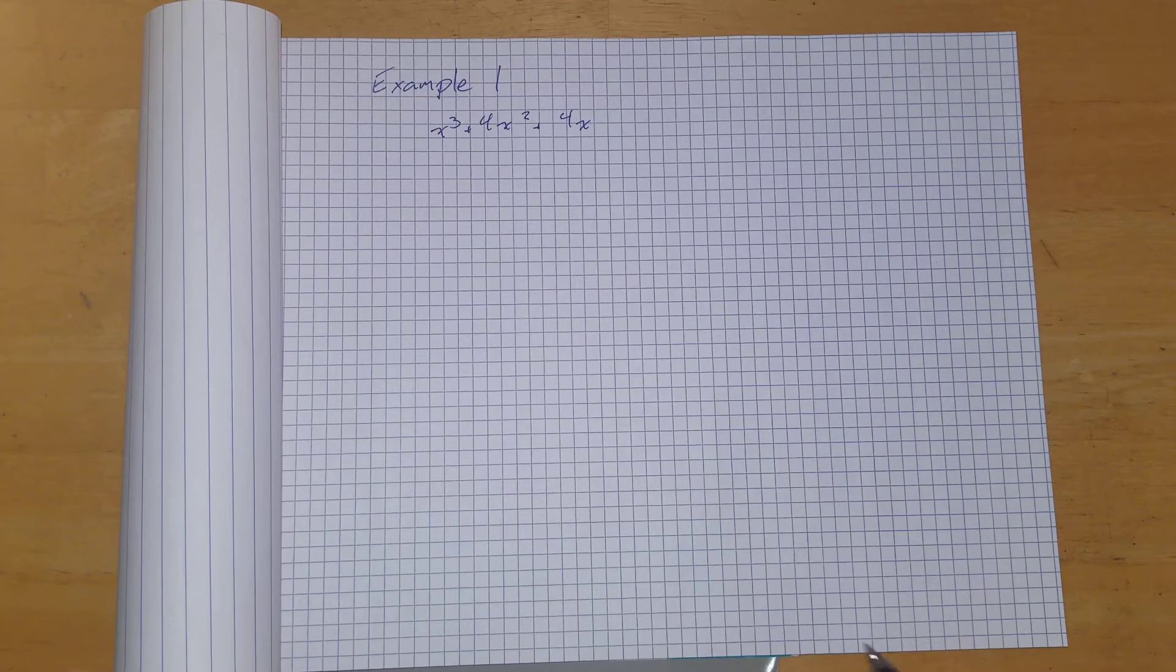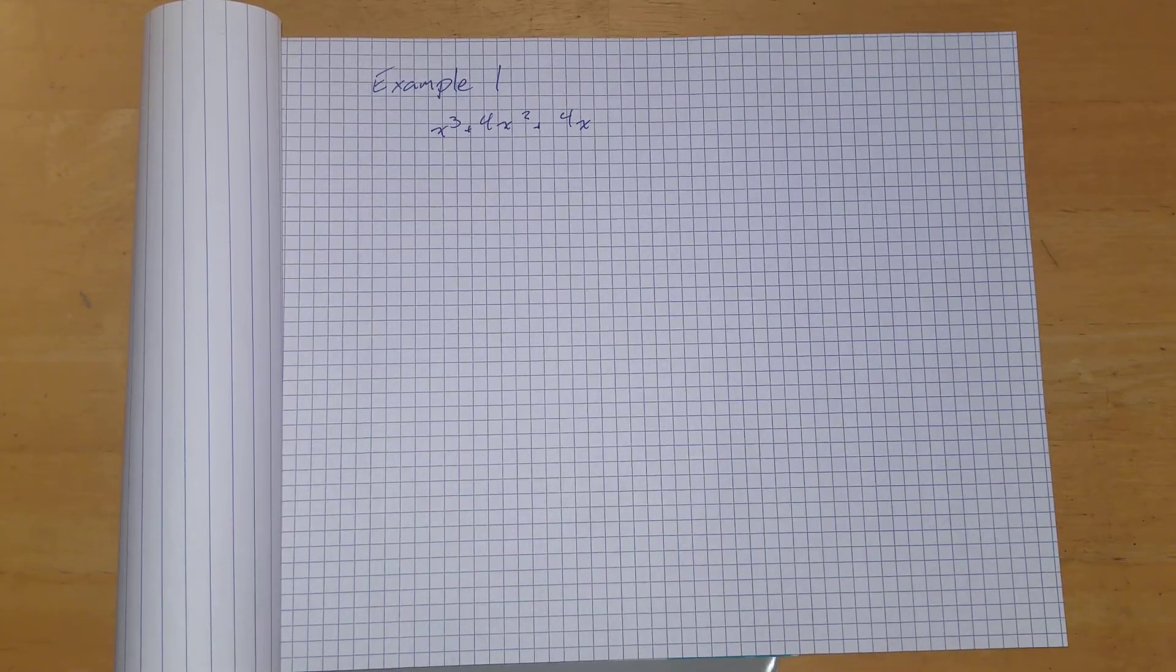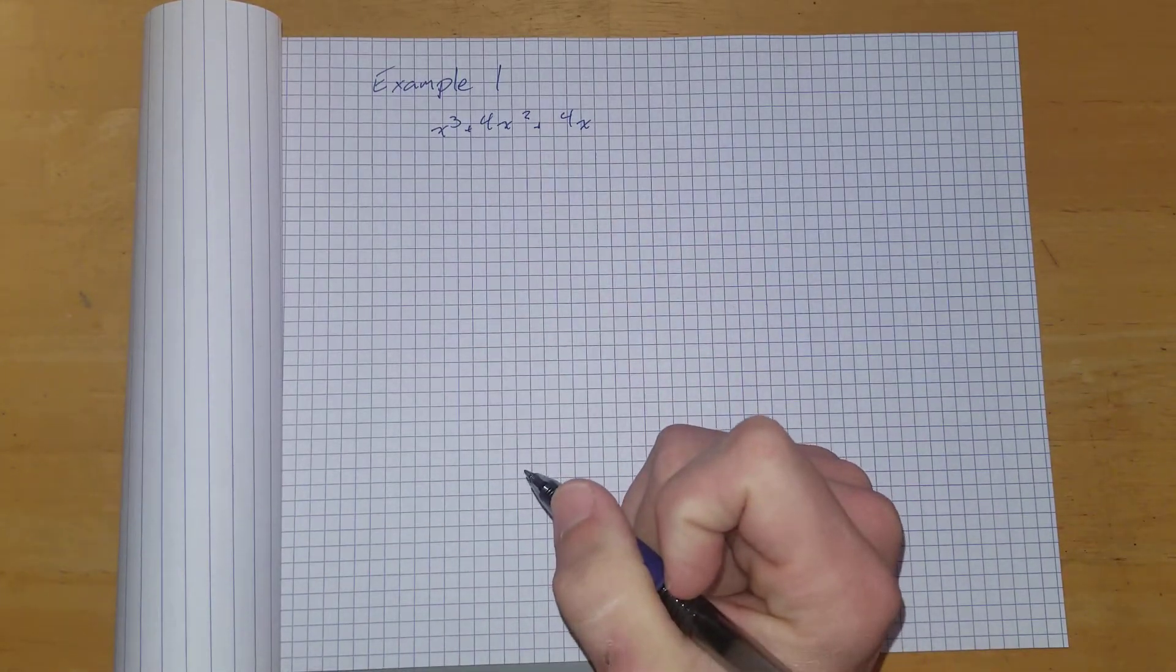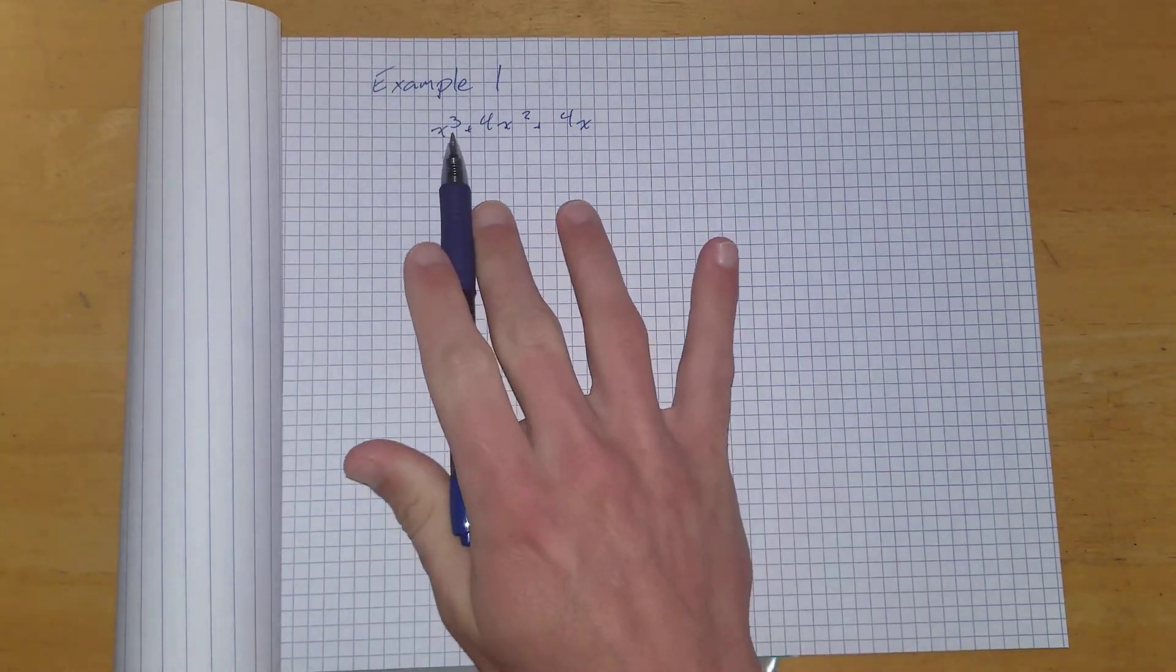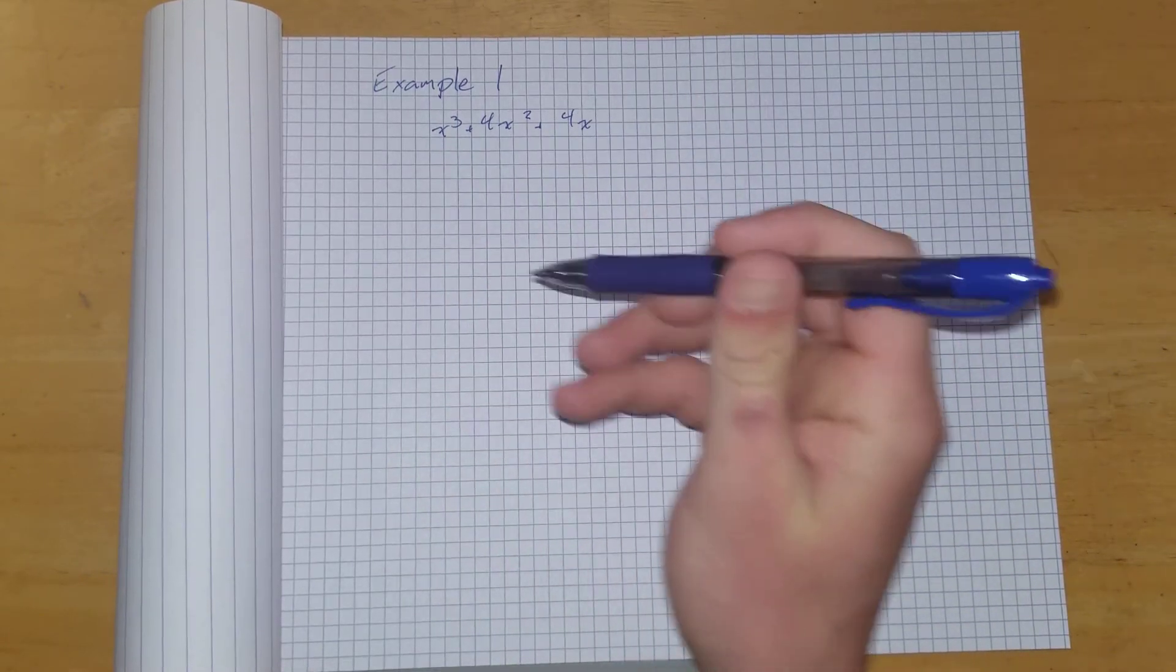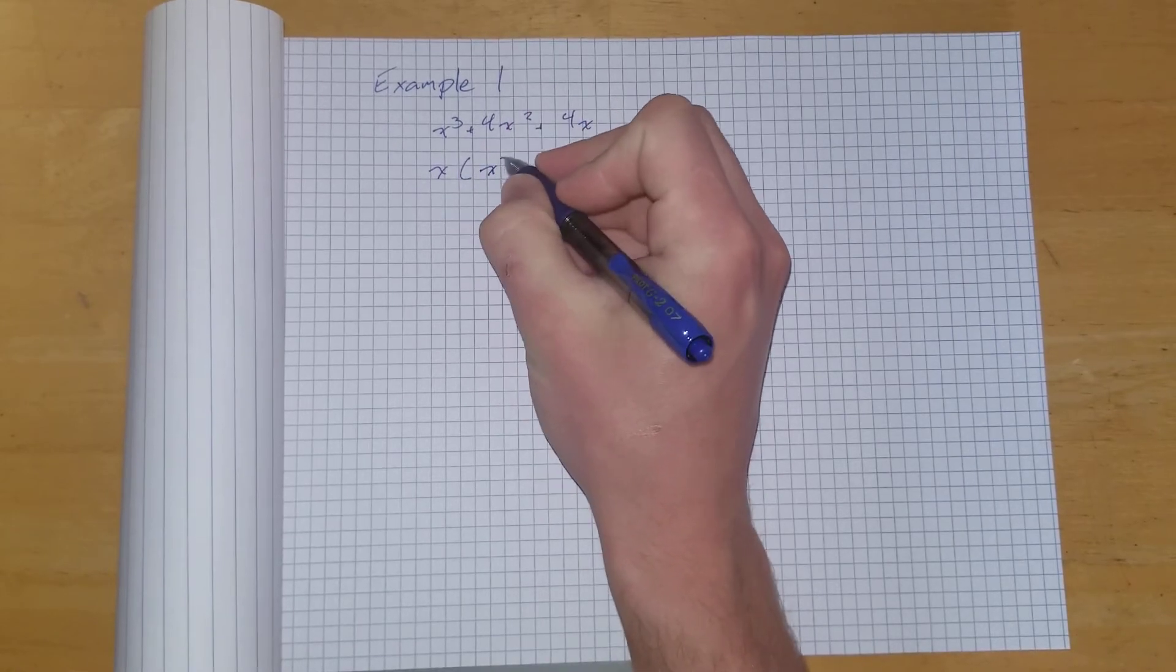So what we can notice first of all, to start with the simple things, is what do each of these share? And it's pretty evident here that each of these share an x. So what I can do, first step, is just pull out an x.